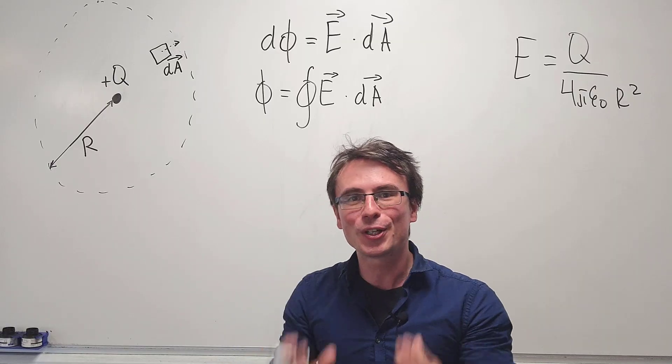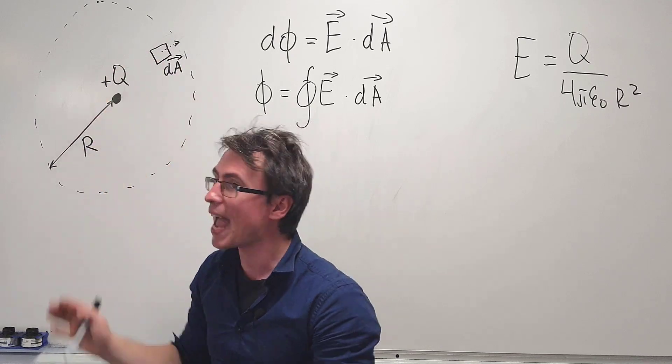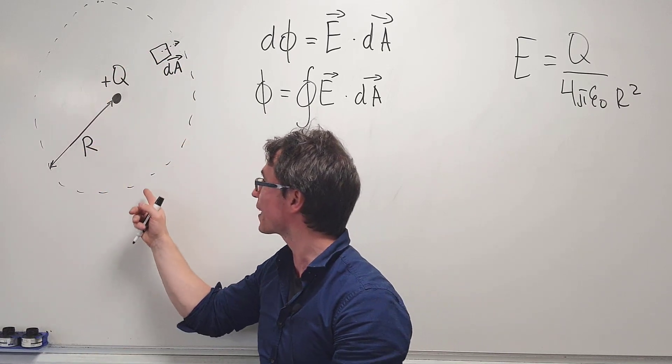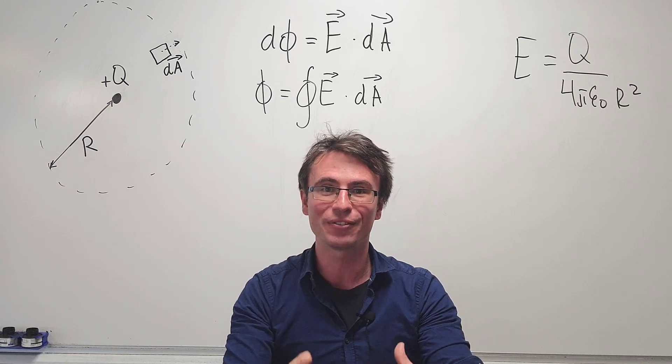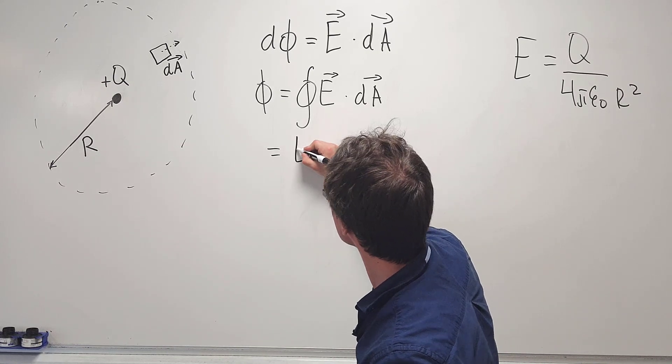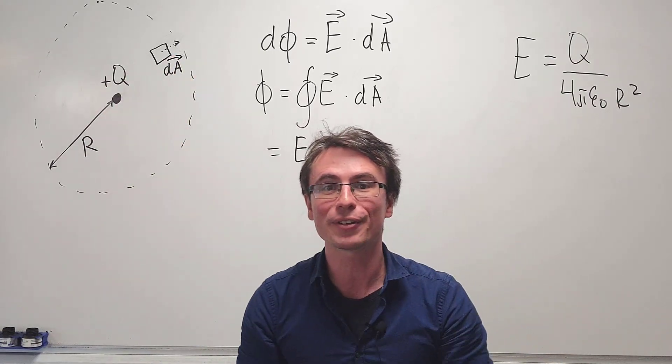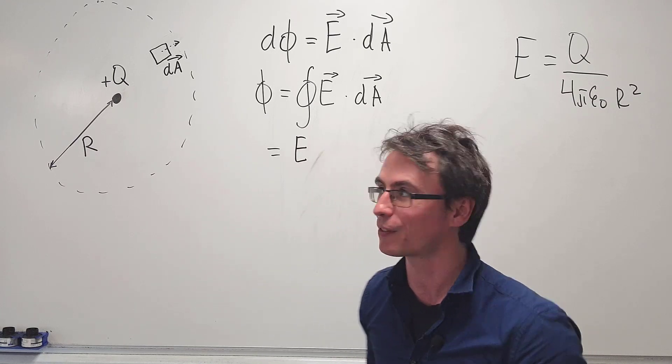Luckily for us, we've got a spherical symmetry. The electric field is exactly the same across every point on the surface of this sphere. Our integral will just be equal to E multiplied by all those little areas added up that will give us the total surface area of the sphere, which is just 4πr².